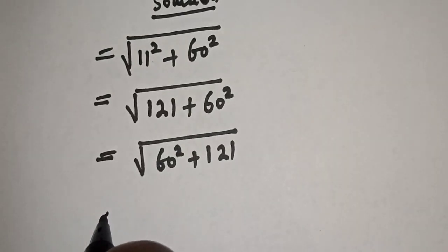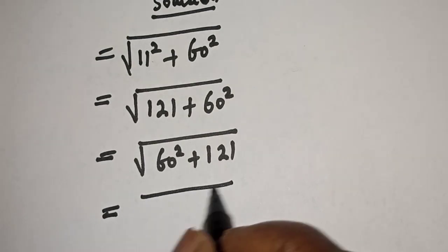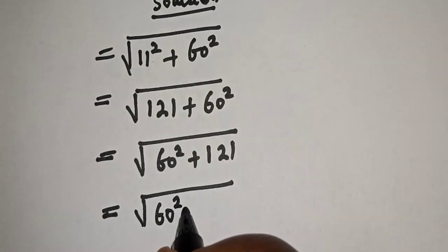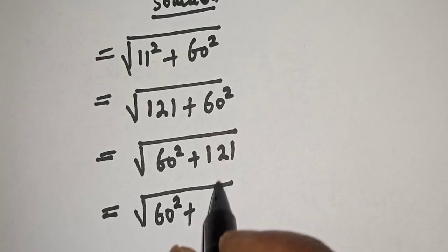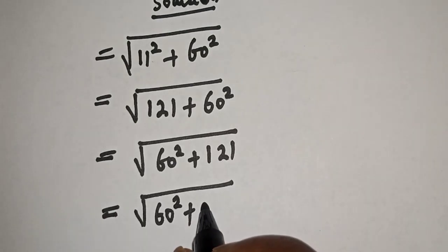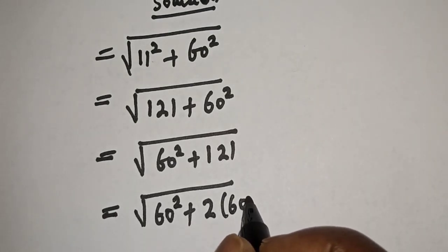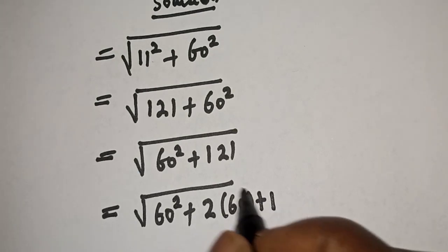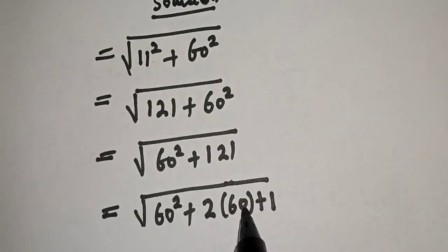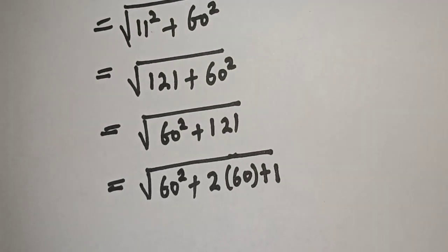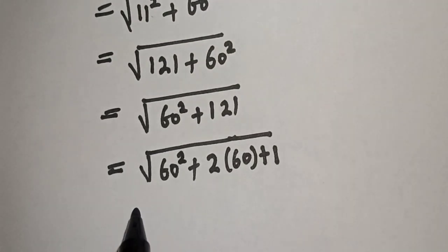This is equal to square root of 60 squared plus 121, where 121 can be written as 2 multiplied by 60 plus 1, because 2 multiplied by 60 is 120, plus 1 is 121. Now take note of this: